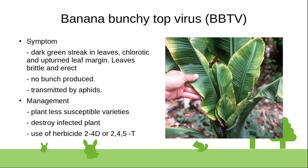Banana bunchy top virus is a viral disease transmitted by aphids. Symptoms include dark green streaks in leaves, chlorotic margins, brittle and erect leaves, and no bunch production. Management includes controlling aphid infestation, planting less susceptible varieties, destroying infected plants, and using herbicides 2,4-D or 2,4,5-T.